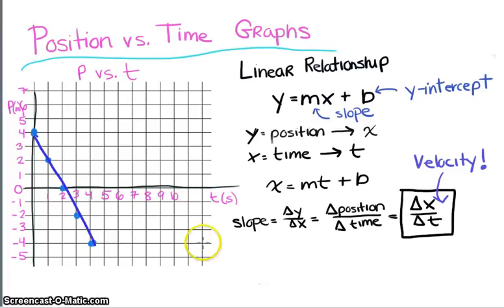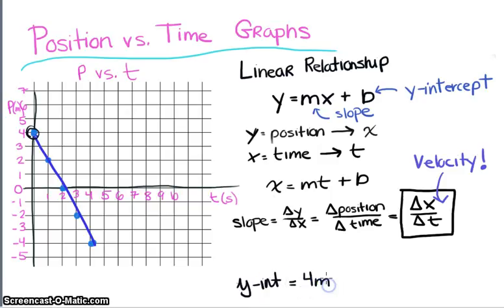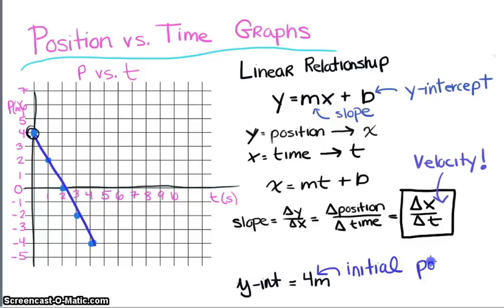Now let's look at the y-intercept. All I need to do is look at the graph and see what's happening when time equals zero seconds. It looks like the car is at the 4-meter mark, so our y-intercept is equal to 4 meters. The physics quantity that describes the position of the car at the zero clock reading is the initial position. Our y-intercept is the initial position of the object, with symbol X-sub-zero.